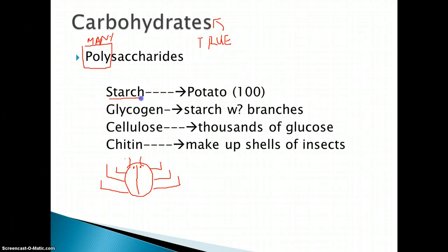Here are some examples. Starch is a carbohydrate made up of hundreds of glucose molecules, hundreds of glucose hooked together. For example, in a potato, we have hundreds of glucose bonded together, and they provide energy when eaten.